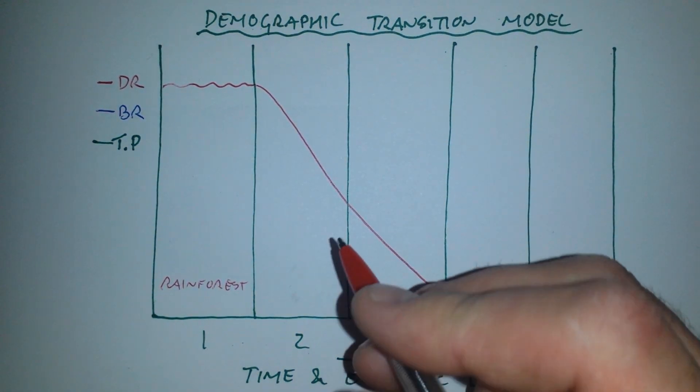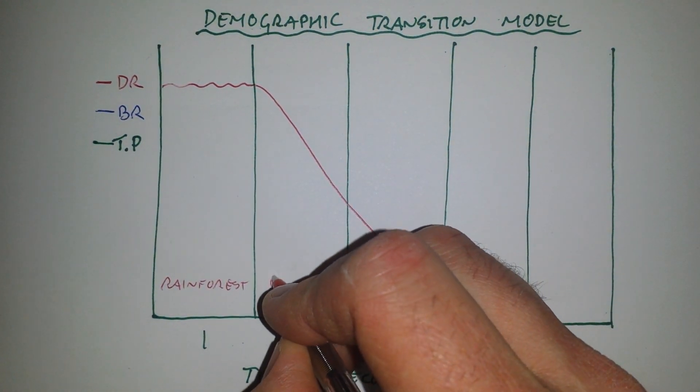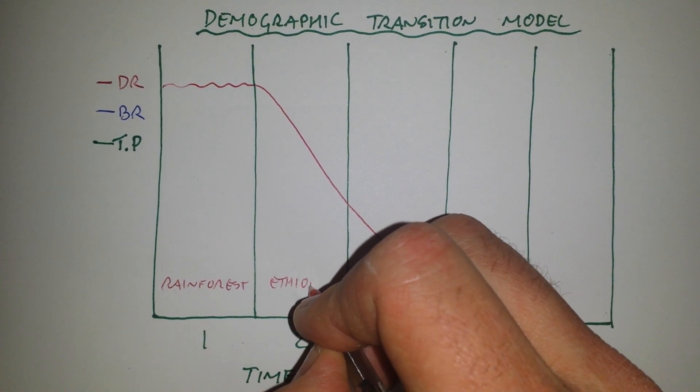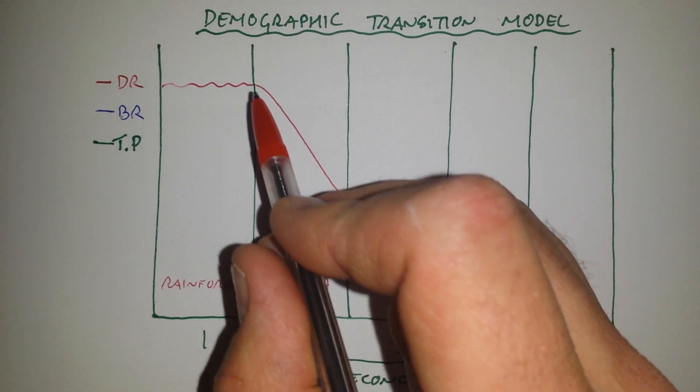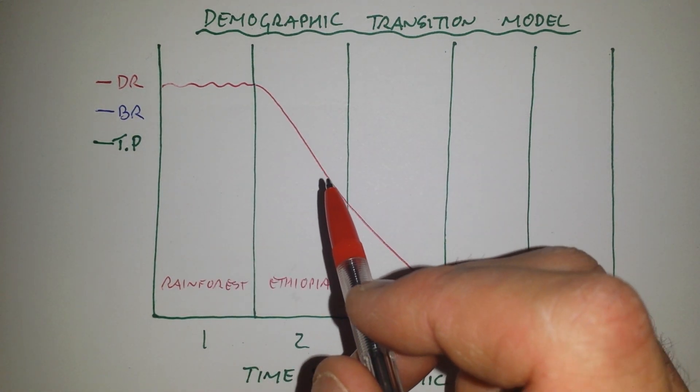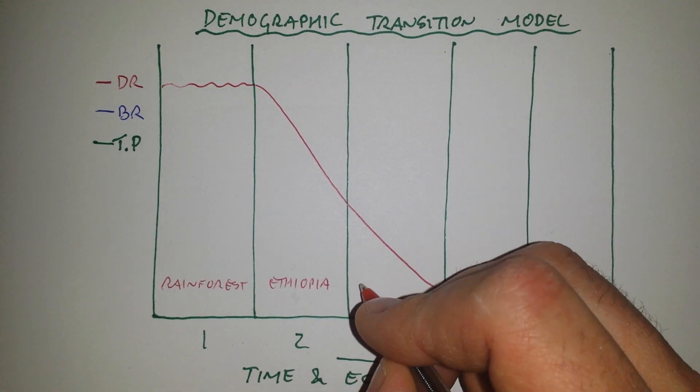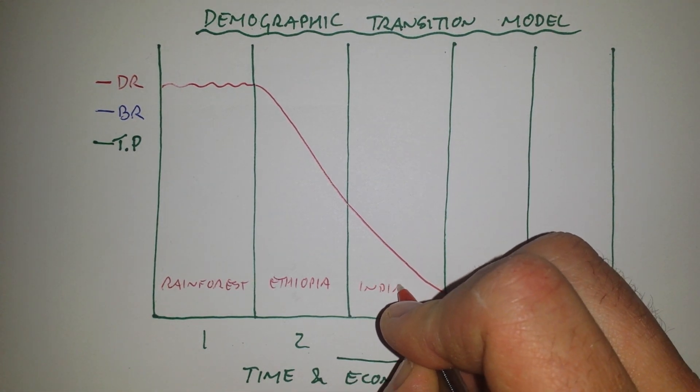So a good example of a country that's maybe in stage two would be somewhere like Ethiopia. They've still got a relatively high death rate, but it is falling because they are getting access to things like medicine and vaccinations. A good example of a country in stage three would be somewhere like India.